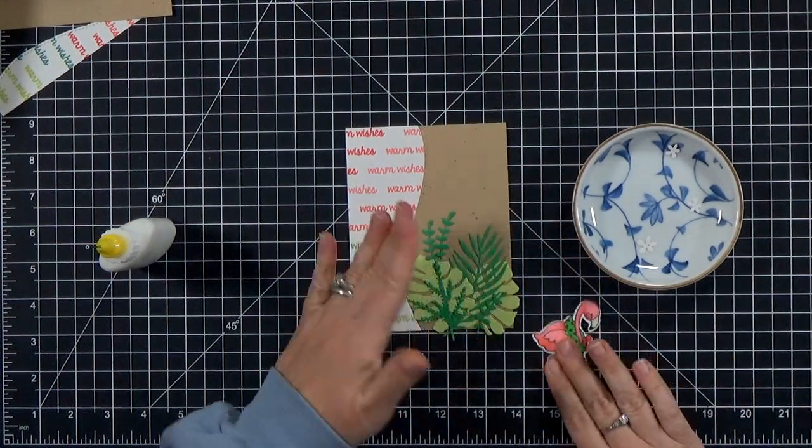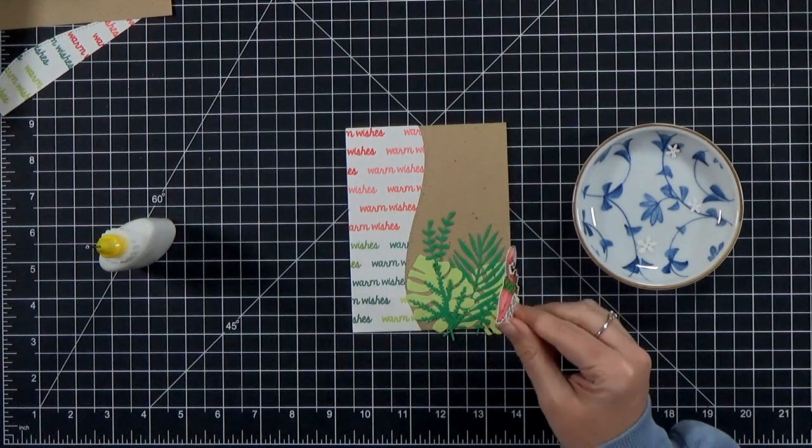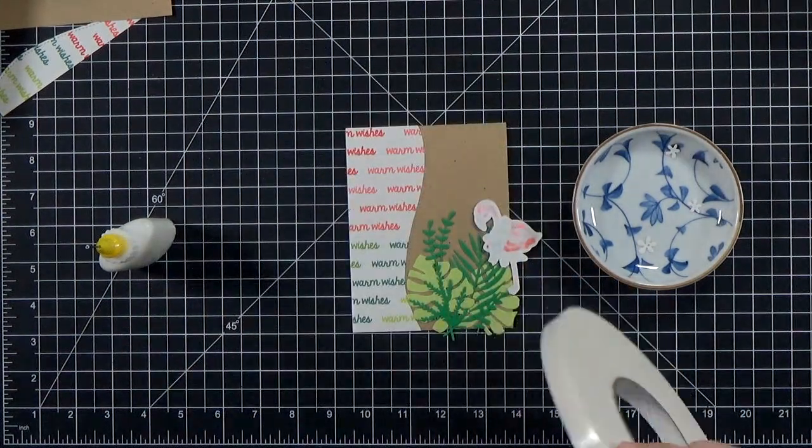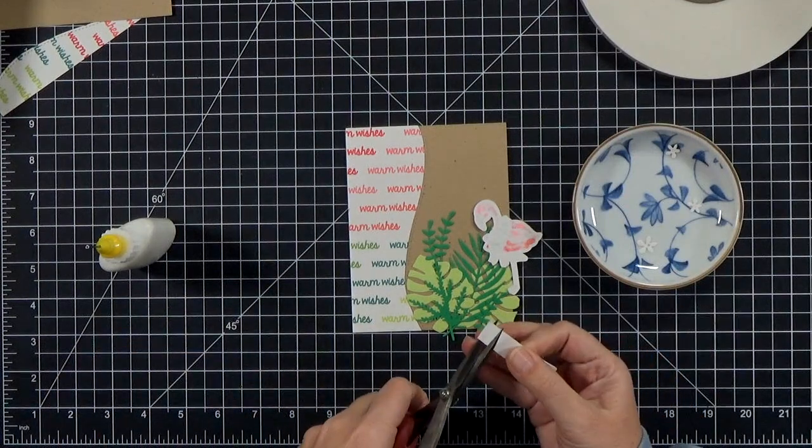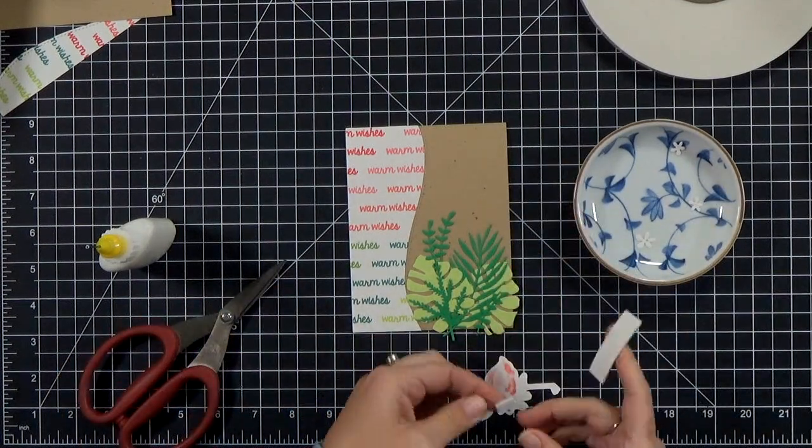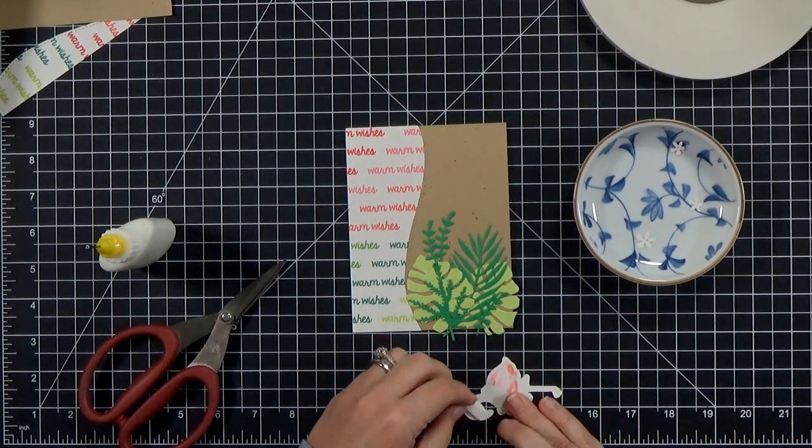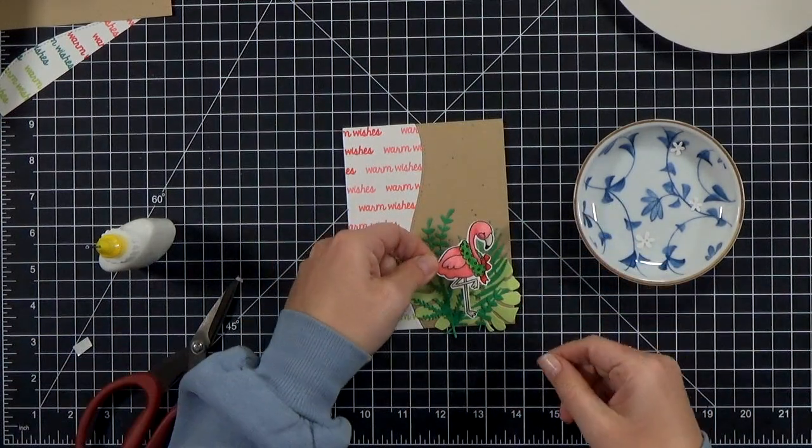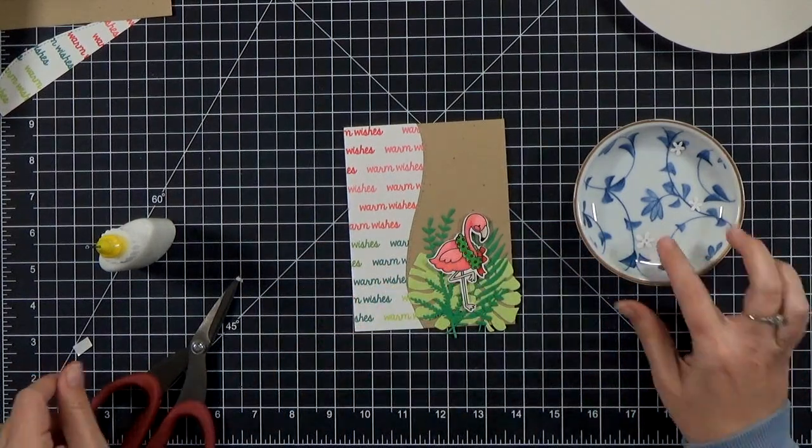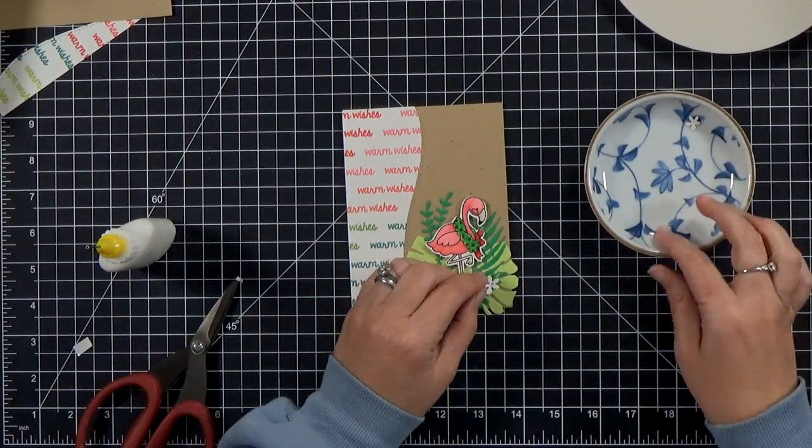And also when I'm gluing them down, I'm not worrying about getting the glue all the way 100% out to the edges of every leaf. If they kind of stick up a little bit, it'll give the card a little more texture. So I like that. Then I went ahead and added some foam tape to the flamingo and popped it up. Again, I want it to kind of be the focal point there. So it's going to live on top.